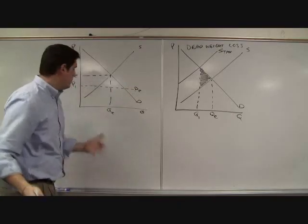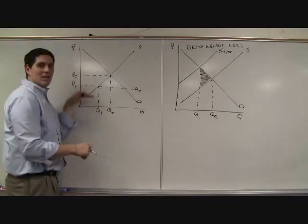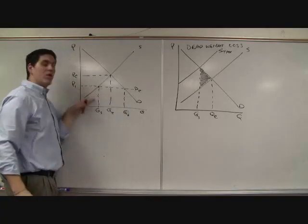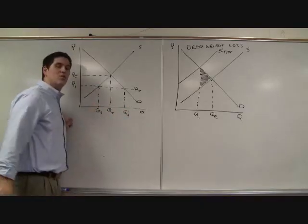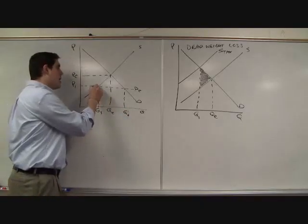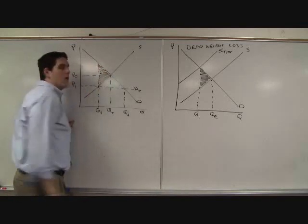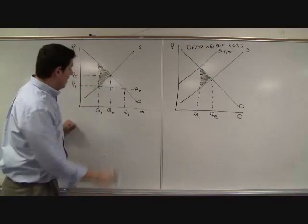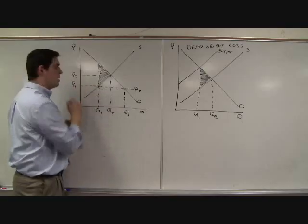Well, what's going to happen? Take a look. New quantity is here. This is the quantity supplied. At the low price, people want the quantity demanded, but the quantity supplied is the only thing produced. We're not producing anything beyond that. So this is the quantity that's actually produced in the economy. Well, what happens? Guess what? Deadweight loss. There it is again.